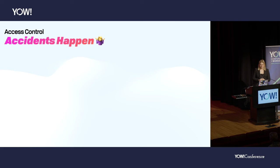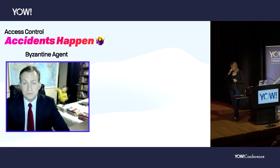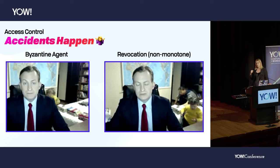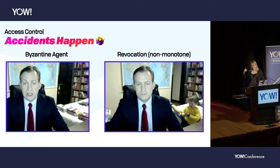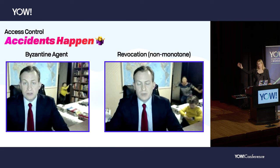Auth accidents do happen — even if you've granted somebody access, maybe their computer gets hacked or you're on bad terms with them. We call this a Byzantine condition. Like this poor guy giving a BBC interview at the beginning of the pandemic, his kid's probably allowed in the room most of the time, but maybe not during a BBC interview. Sometimes you still need to be able to pull somebody's rights back after the fact. This is fundamentally a non-monotone scenario, so there are solutions — come see me after if you're interested — but we still have to interact with non-monotonicity in local first.